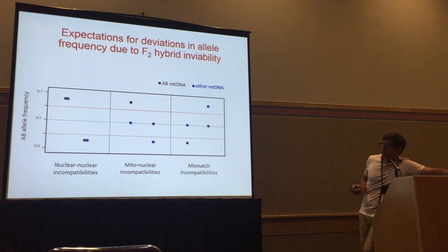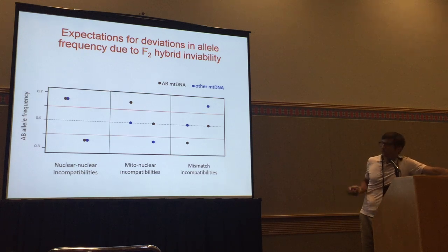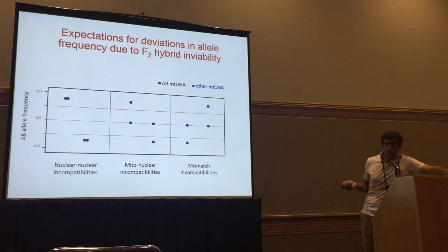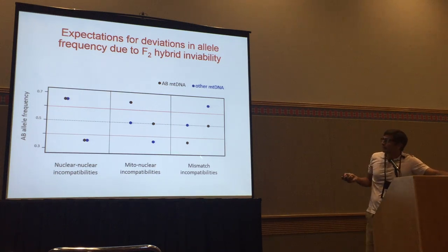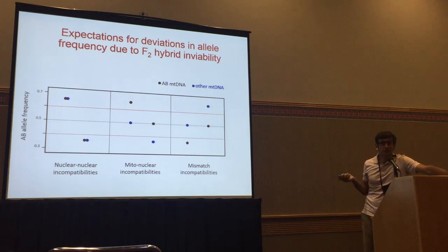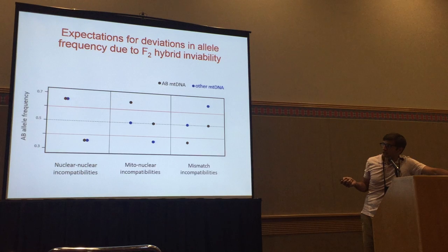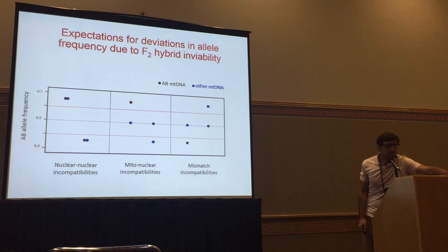For nuclear-nuclear incompatibilities, the two directions of the cross should show shifts in allele frequency that overlap, because the nuclear genome should be the same. For mitonuclear incompatibilities, you should see higher nuclear allele frequency towards the population matching the mitochondria — so black dots should have higher AB allele frequency than blue dots. It's also possible to have mismatch incompatibilities, where you select nuclear alleles from one population in the mitochondrial background of the other. Each dot on the plots represents the average of 3,000 SNPs to decrease noise, and we're looking at chromosome-wide patterns.